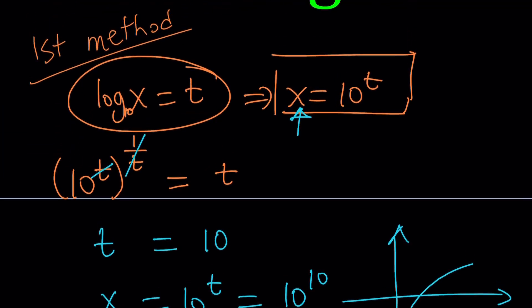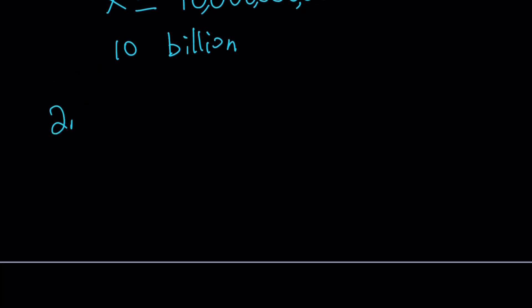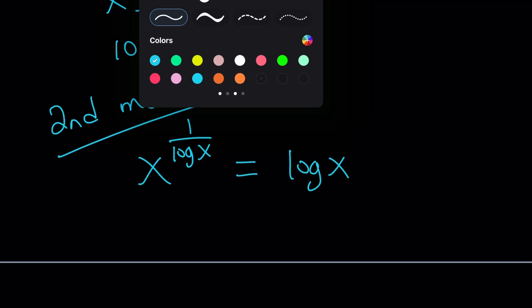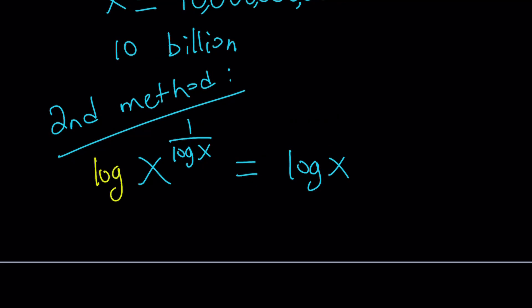Let's go ahead and take a look at the second method and see if we can come up with a third one, maybe, at the end. So, second method, let's rewrite our equation. We have x to the power 1 over log x equals log x. For my second method, this is something that is commonly done, by the way. It's a very common method, logging both sides. And since our log is already in base 10, let's go ahead and use the same base, which will make sense, right? So, log both sides, base 10.